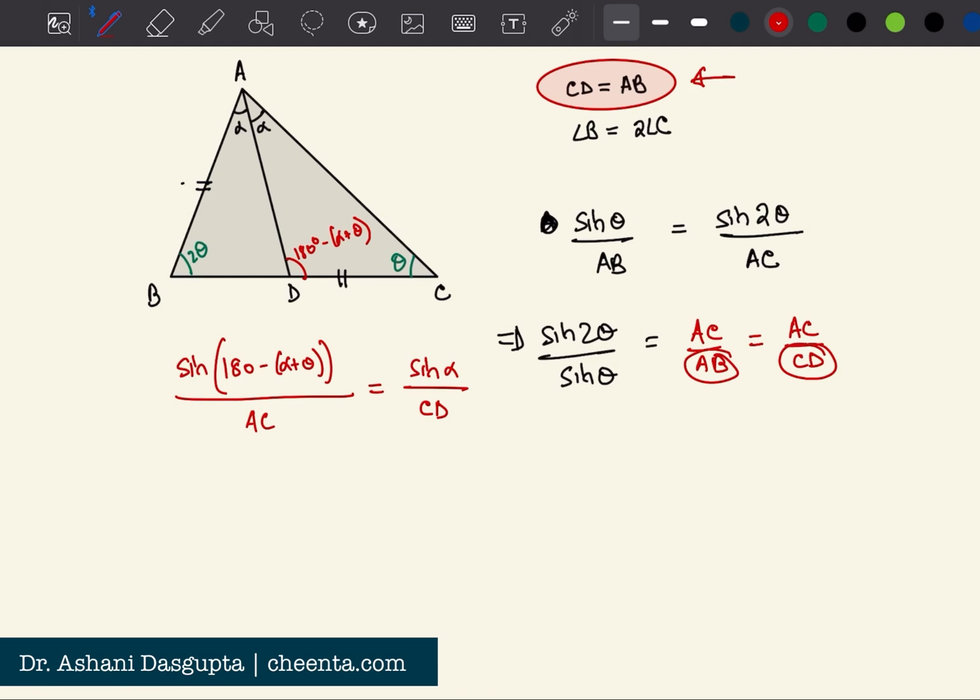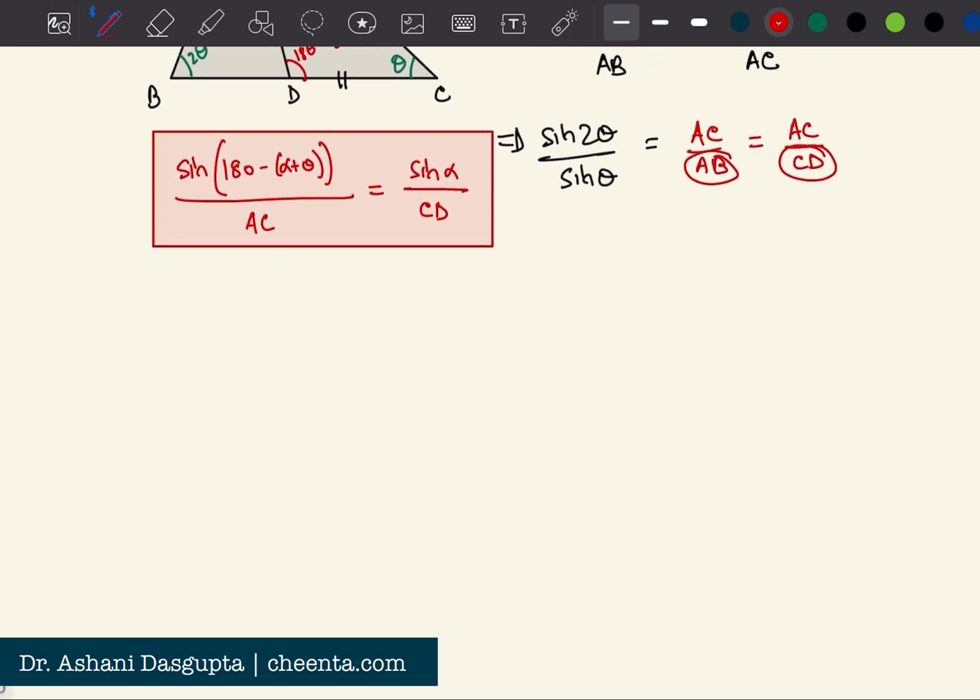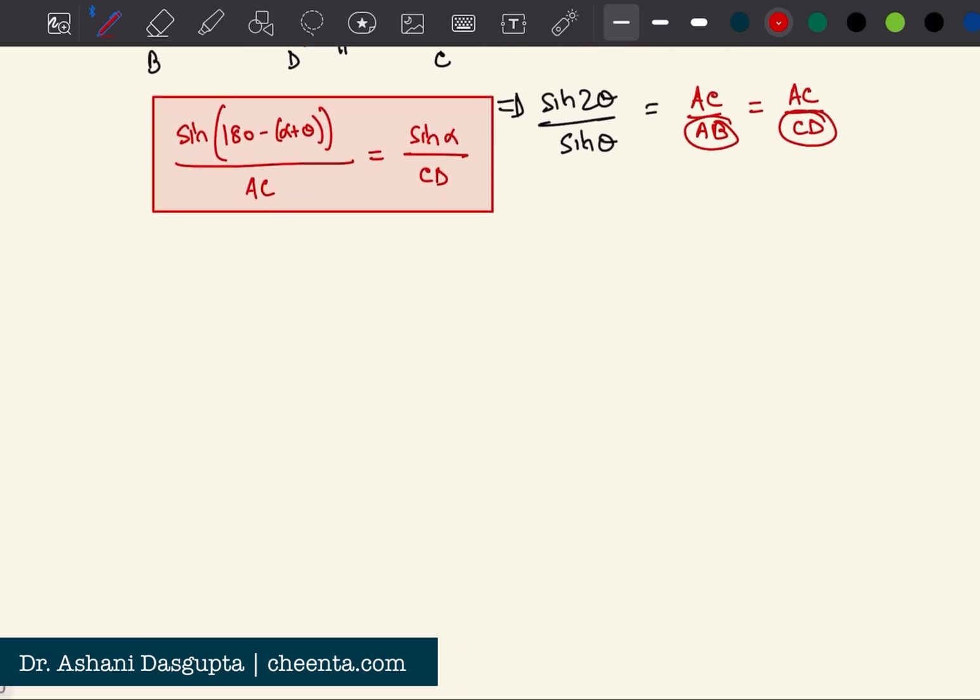Right, okay. So again we get AC over CD from here. So AC over CD is equal to sine of alpha plus theta over sine of alpha. Well, sine of 180 minus alpha plus theta is sine of alpha plus theta - that's a standard trigonometric identity.